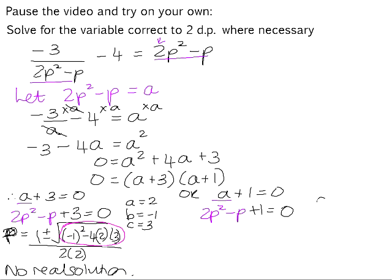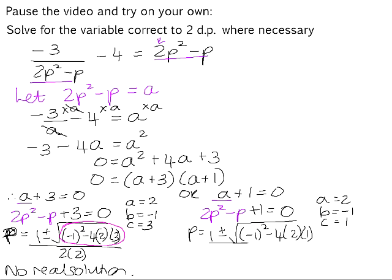For the other equation, 2p squared minus p plus 1 equals 0: a equals 2, b equals negative 1, c equals 1. So p equals 1 plus or minus the square root of negative 1 squared minus 4 times 2 times 1, all over 2 times 2. Again the value under the square root is negative, meaning this equation also has no real solution. So there are no values for p that will make the left and right sides equal.